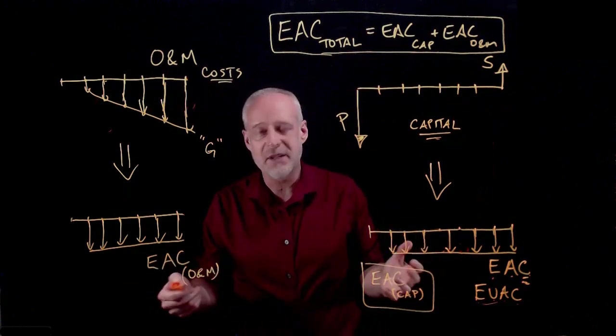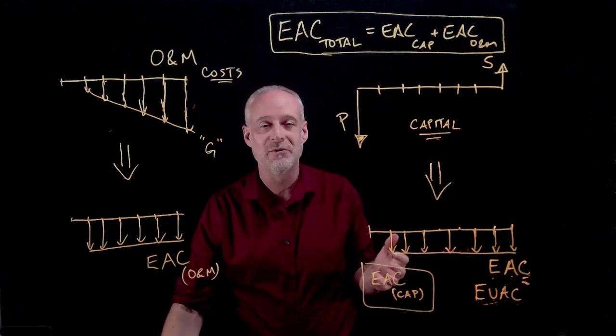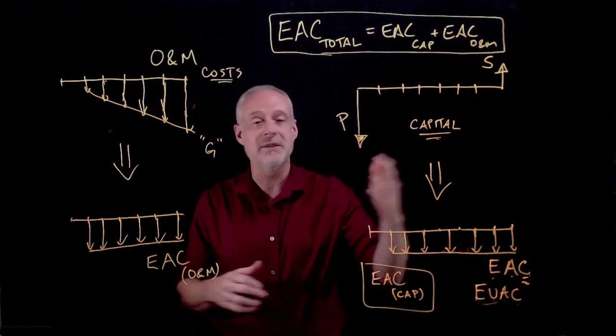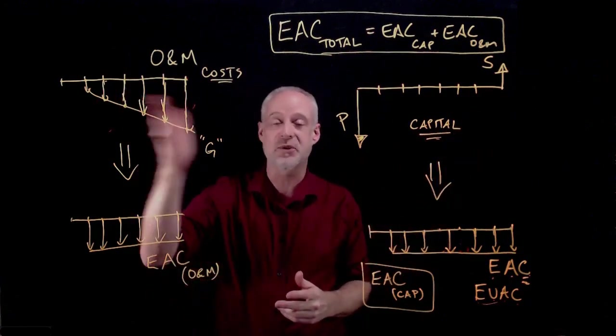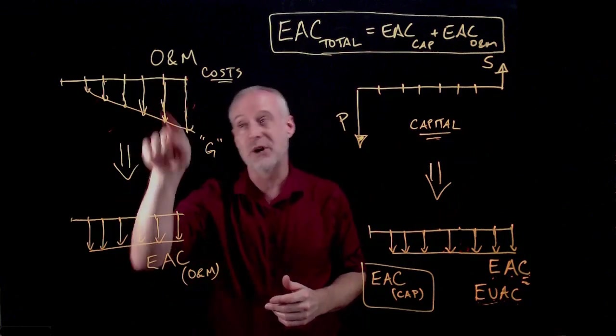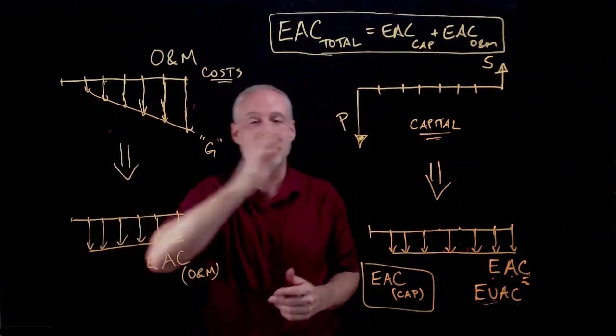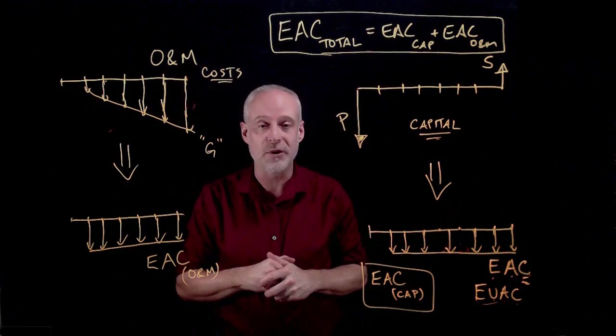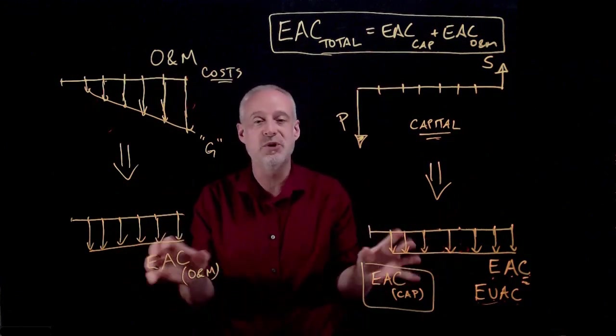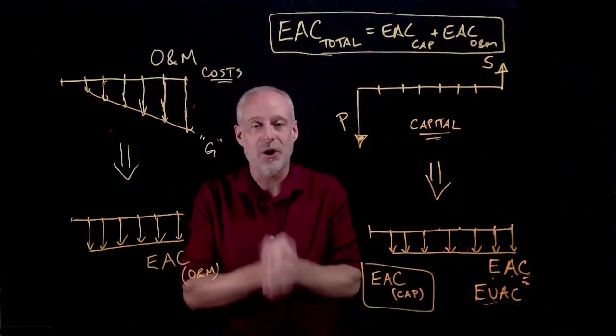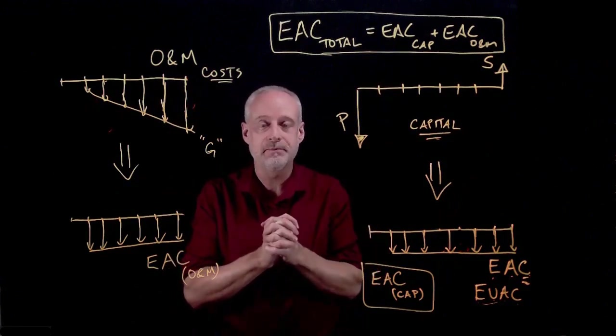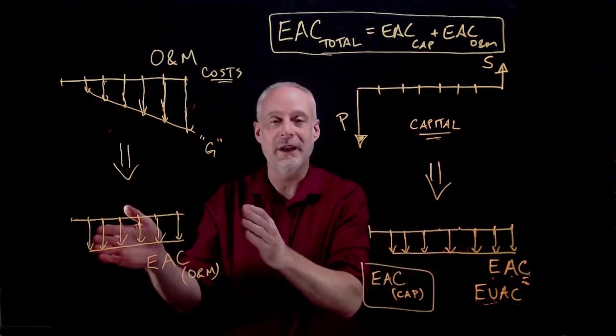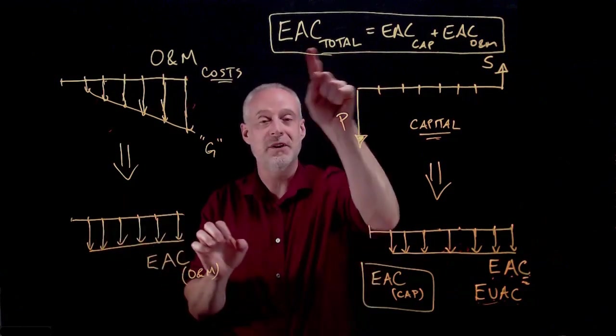Now, this, I think, is relatively understandable for most students. And if you're comfortable with how you convert P's and F's into A's or even discrete amounts, so if these are all different, you could bring them all back to the present and then add them all up and then convert them to an annuity. If you're comfortable with all of those time value of money maneuvers, then getting these numbers isn't too bad. What you need to embrace as a concept is that as I change the number of years that I own an asset, I actually change the EAC.